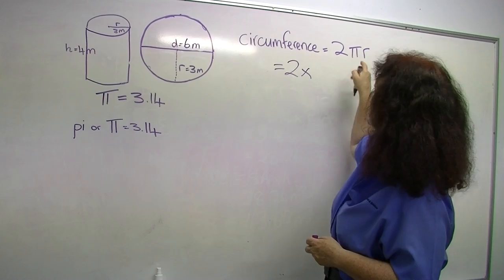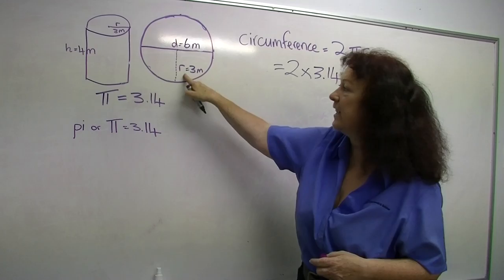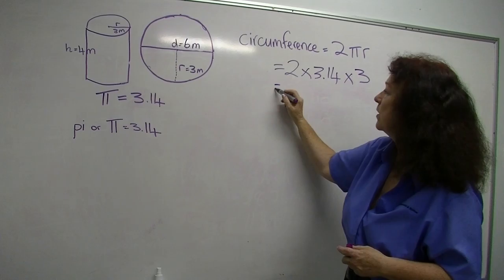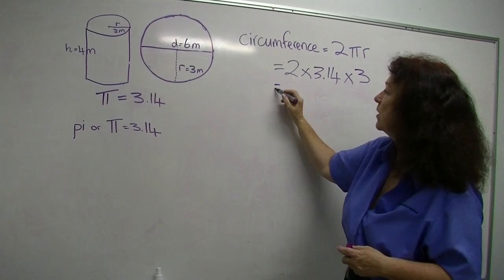2 times pi 3.14 times the radius 3 metres. So 2 times 3 is 6 times 3.14. That's going to give us an answer of 18.84 metres as our circumference.